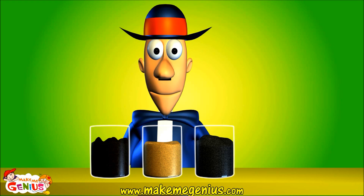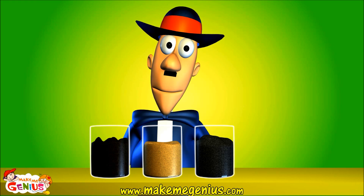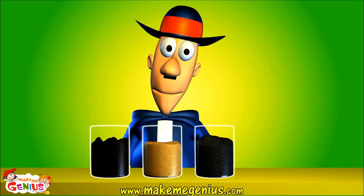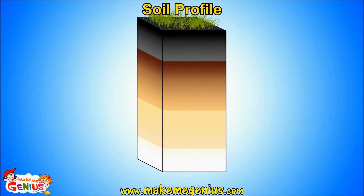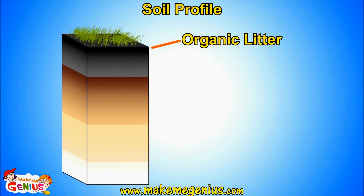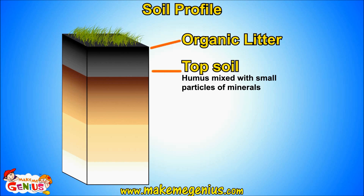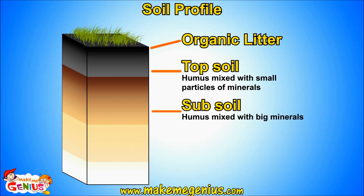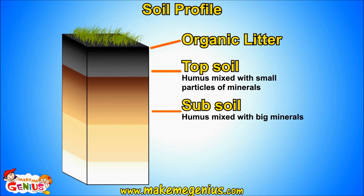Did you know all plants grow on the top part of the earth? This is called soil. Soil has different layers — five major layers. The top layer is made up of dead leaves and branches. The second layer is made up of some humus and small particles of minerals. Humus is made up of partially and totally decayed animals and plant parts, and it contains a lot of nutrients which are important for plants. The third layer is subsoil — it consists of some humus and some minerals. The second to last layer is horizon C — it is purely minerals. Finally, the last layer is bedrock, completely made up of rocks.